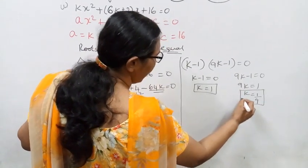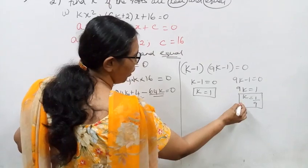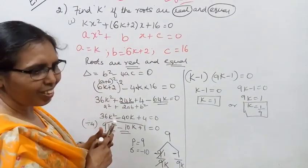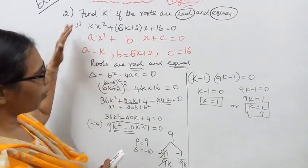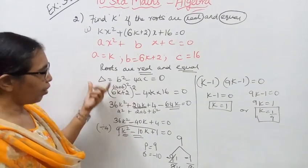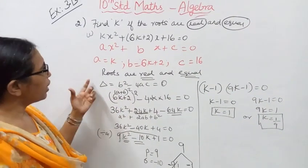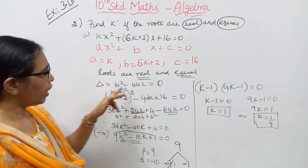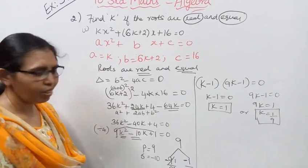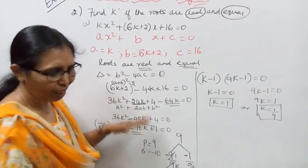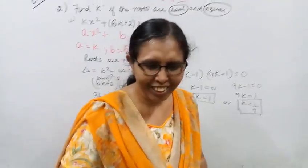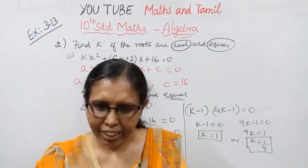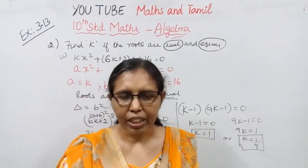So the answer is k = 1 or k = 1/9. For real and equal roots, we use b² - 4ac = 0. Okay students, if this channel helps you to get 100 marks, subscribe and click the bell button.